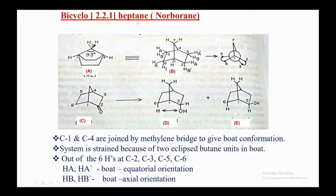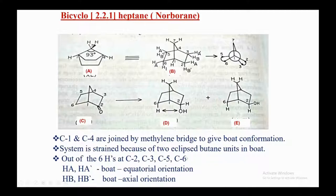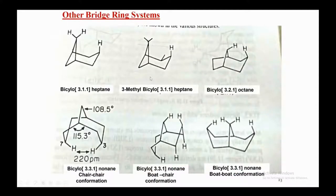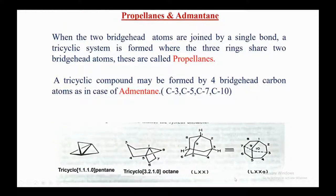Bicyclo[2.2.1]heptane — norbornane — has a structure that also forms an enol form, and its Newman projection shows that C1 and C4 are joined by a methylene bridge, giving a strained system with two eclipsed butane units. Among the six hydrogens at C2, C3, C5, and C6, the exo H and endo H have different orientations. In bicyclo[2.2.2]octane, C1 and C4 are joined by an ethylene bridge and in idealized form all adjacent positions are eclipsed.